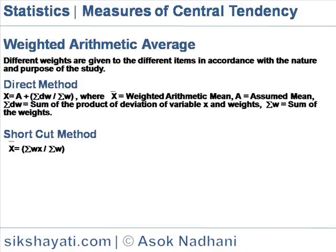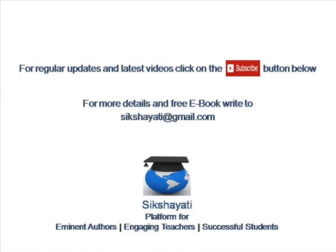There are two methods. One, direct method. In direct method, X bar is equal to A plus sigma DW by sigma W, where X bar is the weighted average arithmetic mean, A is assumed mean, sigma DW is sum of the product of deviation of variable X and weights, and sigma W is equal to sum of the weights.